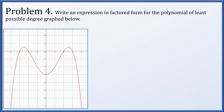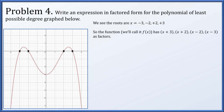In problem 4, we have the graph of a polynomial and want to write an expression in factored form that could represent it. We find roots at x = negative 3, negative 2, positive 2, and positive 3. Therefore the function has factors (x plus 3), (x plus 2), (x minus 2), and (x minus 3). The root of negative 3 gives factor (x plus 3), because plugging in x = negative 3 produces a zero.